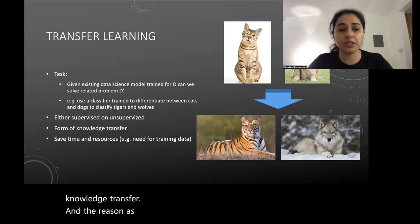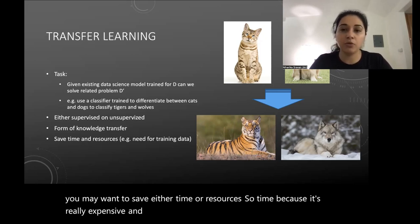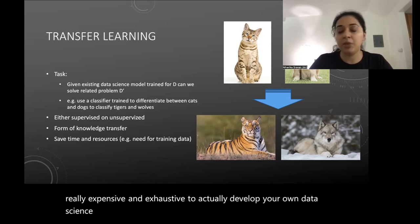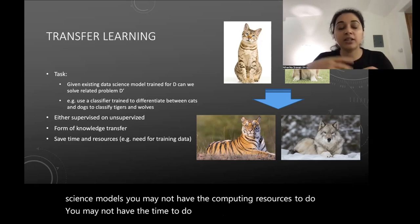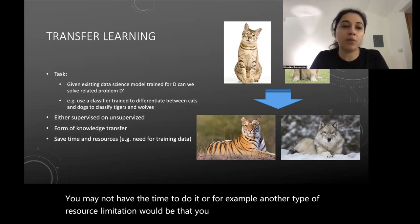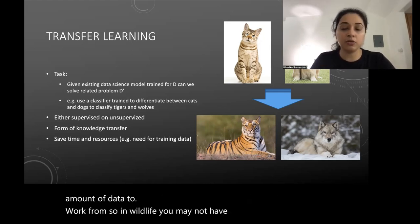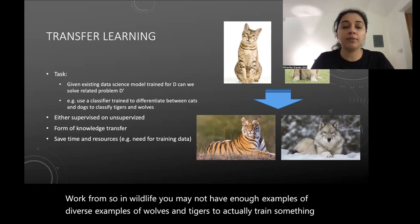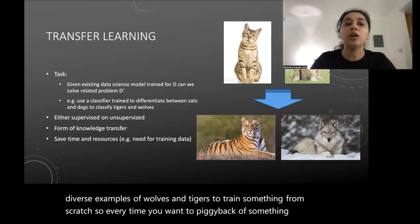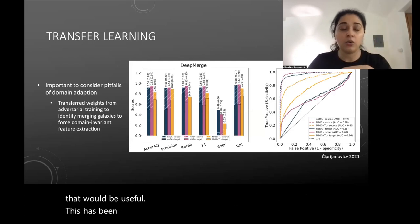You may want to use transfer learning to save time or resources. Developing your own data science models from scratch is expensive and exhaustive, and you may not have the computing resources or time. Another resource limitation: you might have only a small amount of data to start from — in wildlife classification you may not have enough diverse examples of wolves and tigers to train from scratch. In those cases, piggybacking on someone else's model via transfer learning is very useful.